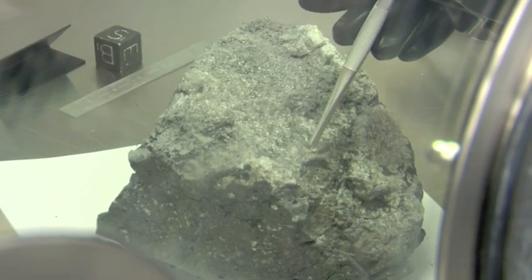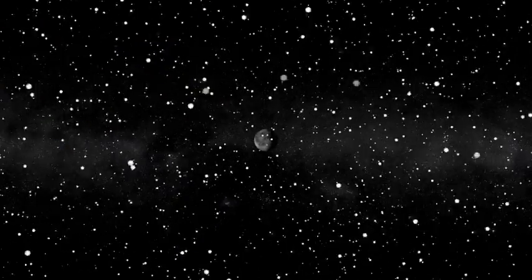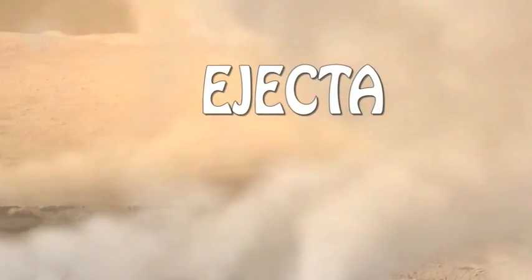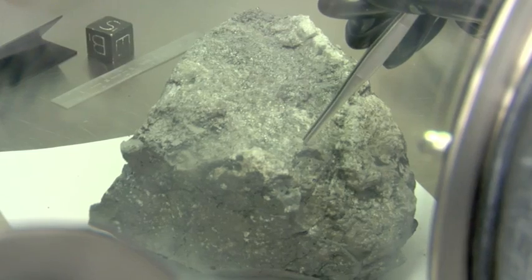It also has features on here that we call zap pits. These pits are caused when meteorites strike the surface of the moon, the ejecta is thrown up, and when it comes down, it makes these tiny little craters, and we call them zap pits.